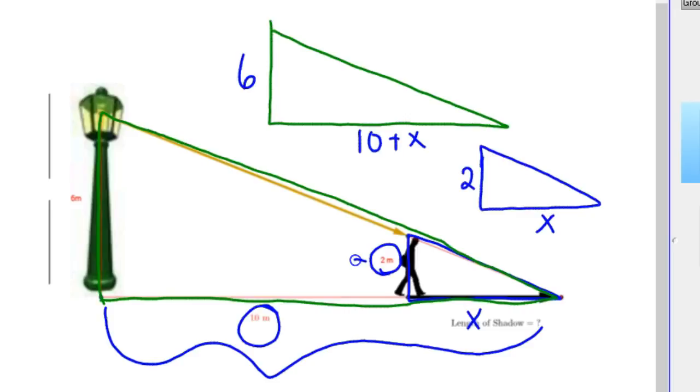Because you have to add up the 10 from the lamppost to the person plus the x to the end of the shadow. And so you can set up the proportion for this. So your scalar factor, if we went big to little, is 6 over 2 equals, and if you go in the same order, big to little, and we're trying to find the length of that shadow, 10 plus x over x. And you're ready to cross multiply. So 6 times x, or 6x, equals 2 times 10 plus x.